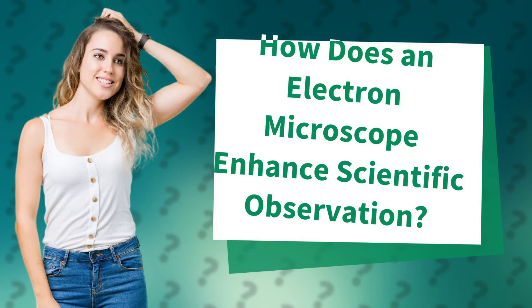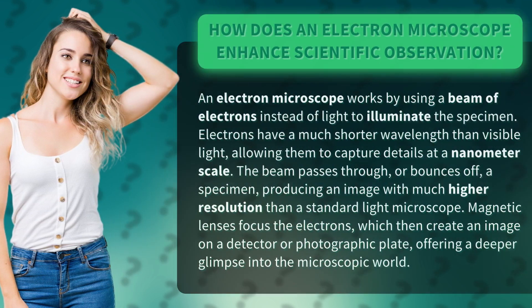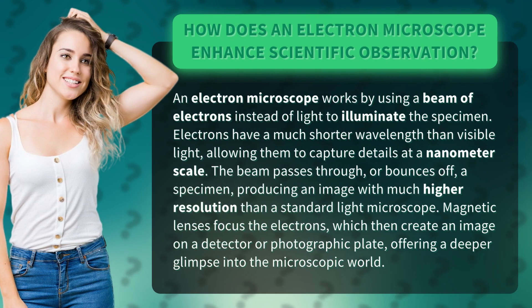How does an electron microscope enhance scientific observation? An electron microscope works by using a beam of electrons instead of light to illuminate the specimen. Electrons have a much shorter wavelength than visible light, allowing them to capture details at a nanometer scale.